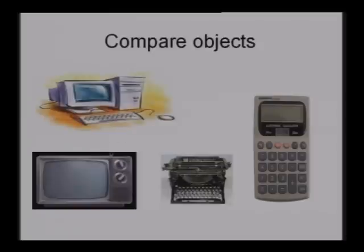Can you list out at least three similar and dissimilar objects for computer? The first one is typewriter, the second one is TV, and the third one is calculator. When you are comparing the properties of a typewriter and a computer, you will know something similar and dissimilar. First, a computer is an electronic device, whereas a typewriter is a mechanical device. When you are comparing calculator and computer, a calculator is used for performing arithmetic calculations, whereas in a computer you can perform both arithmetic and logical operations.